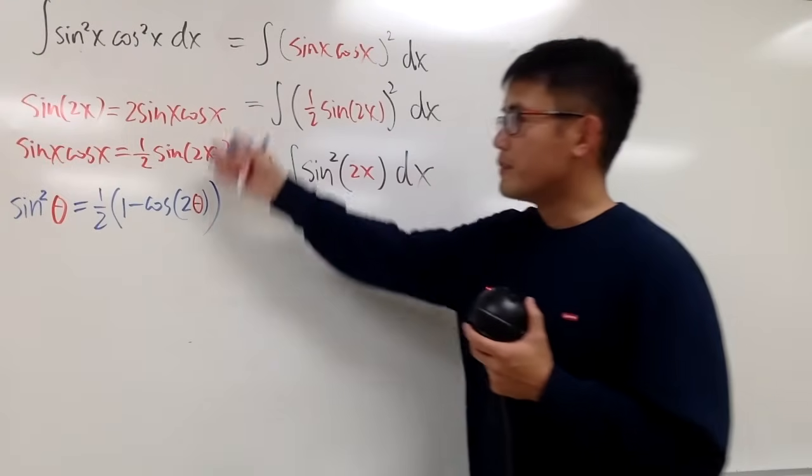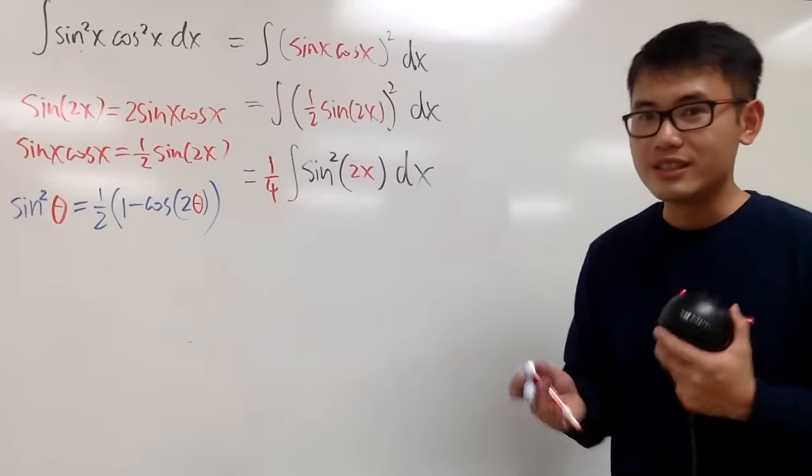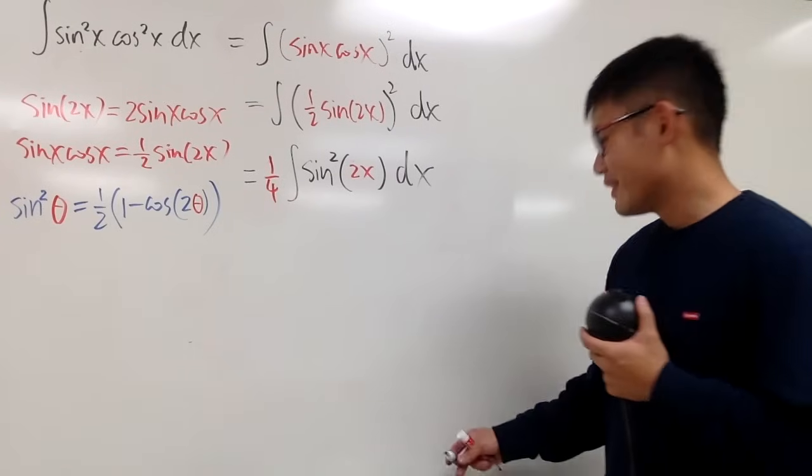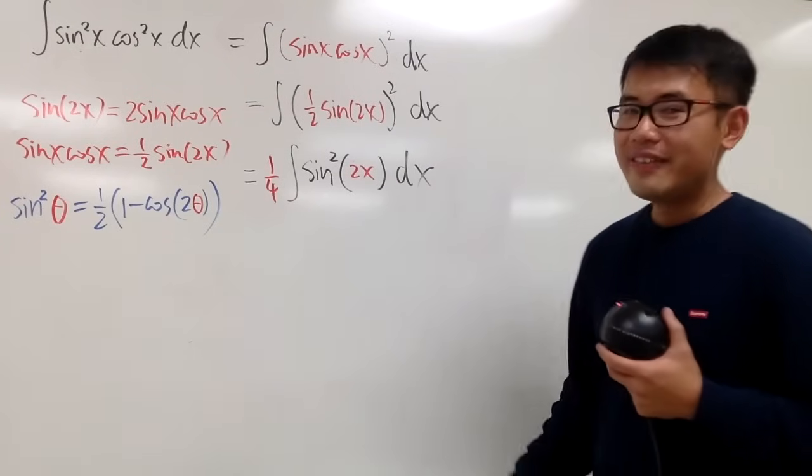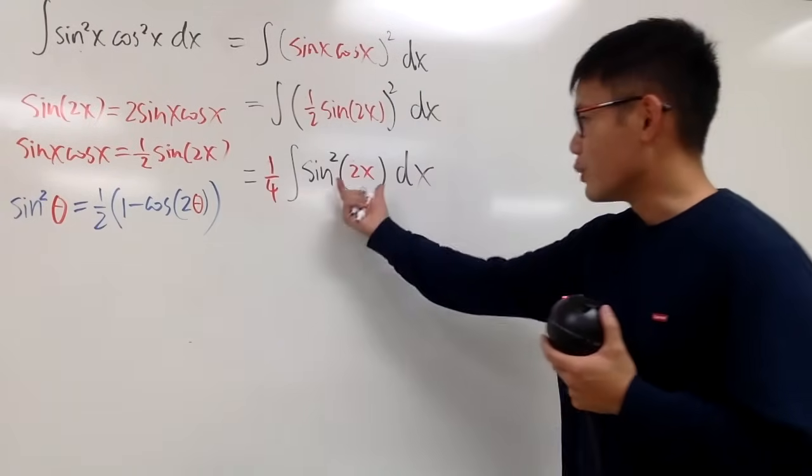So let me just put down theta for it. When we have this, we can change that to 1 half times 1 minus cosine of... The angle inside is 2 times that angle, which is the angle theta. Okay? And if you want to see how to prove these formulas, you guys can check out our videos. I will have links to those videos in the description for you guys.